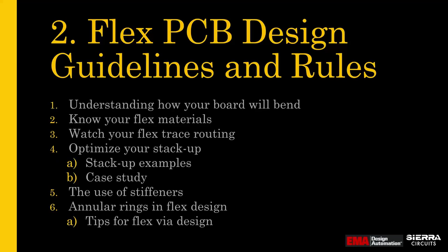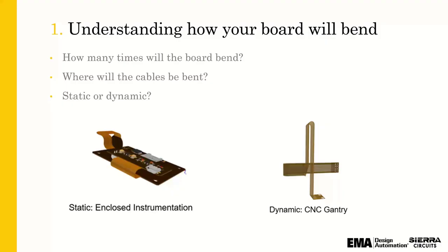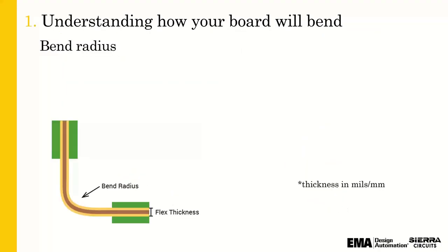Key points for understanding flex design include: understanding how the board will bend, understanding the materials, and how you route — which Janine will cover later. Bend radius is super important. It's basically the minimum amount of bend you can deal with. You need to understand how many copper layers you have in your flex region that will have to bend. IPC 2223 specifies the standards of the bend radius.